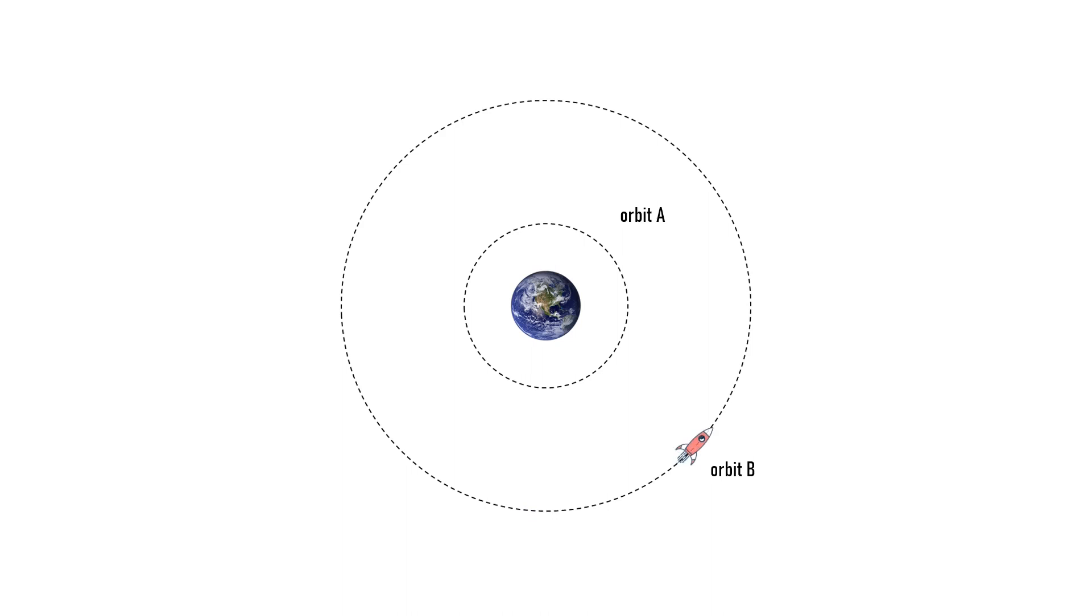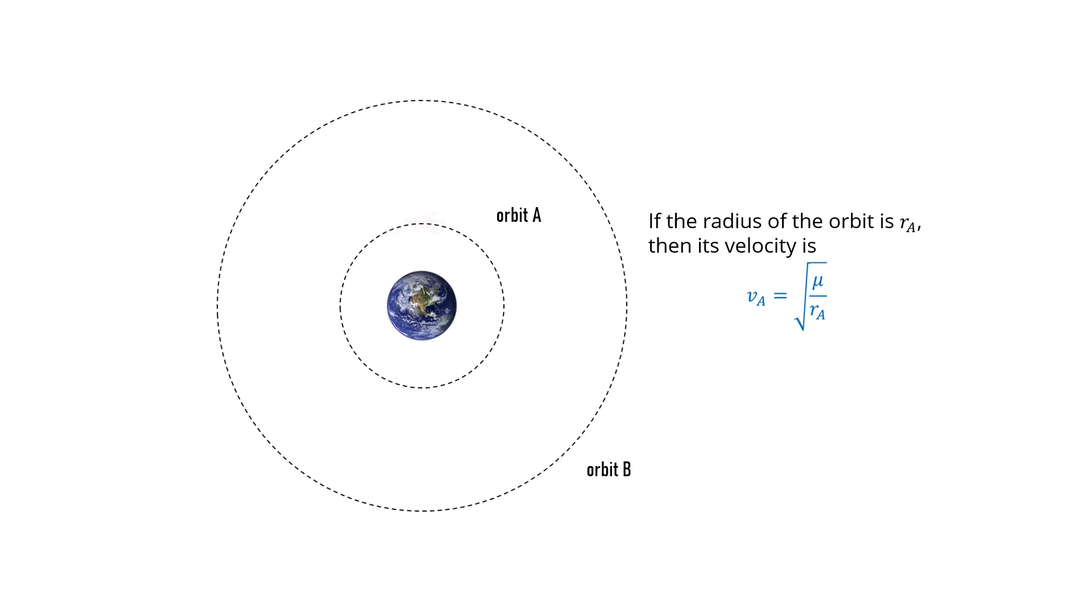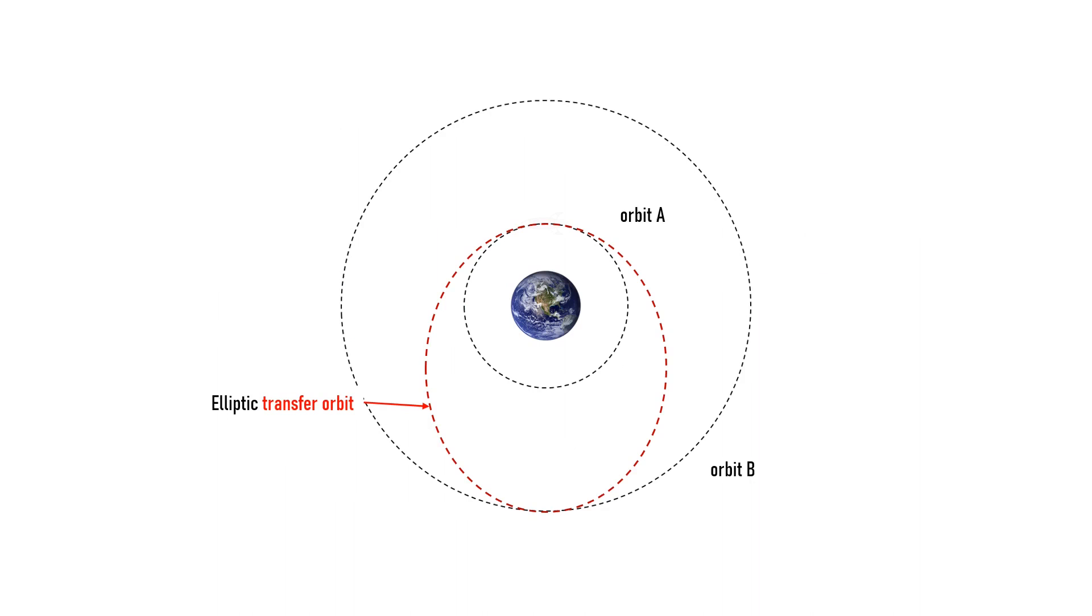Let me give you a hint, the spacecraft will have to change its velocity, or in other words, it has to speed up a little bit to make the leap to the higher orbit. Now how does that work? Remember, a circular orbit has a constant velocity. If we change its velocity, it won't be a circular orbit anymore.